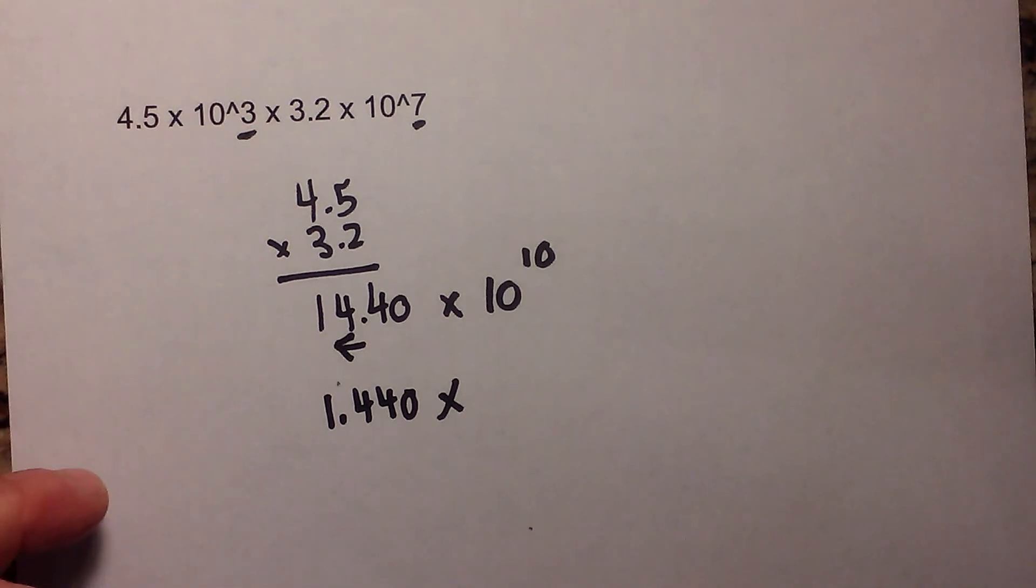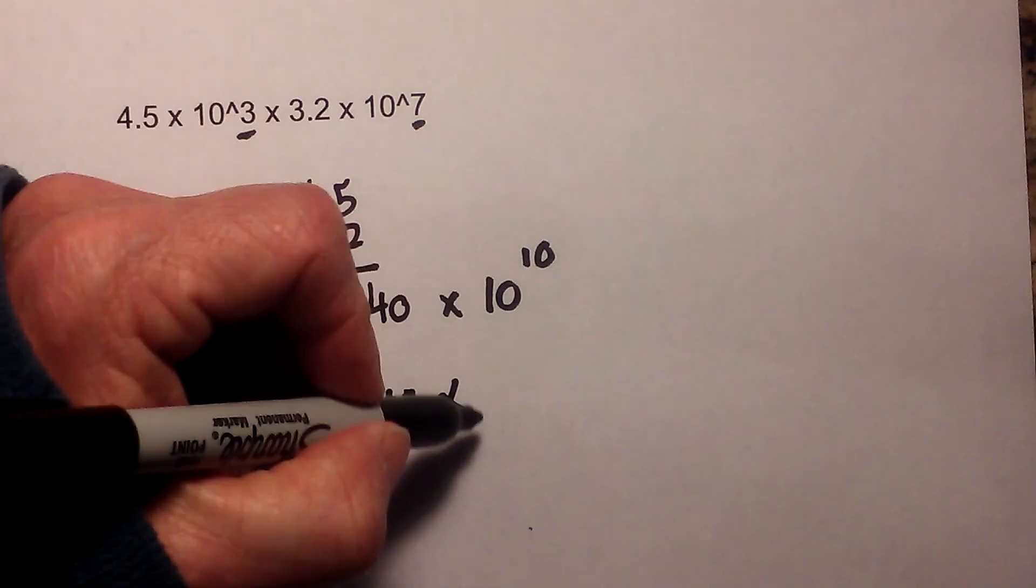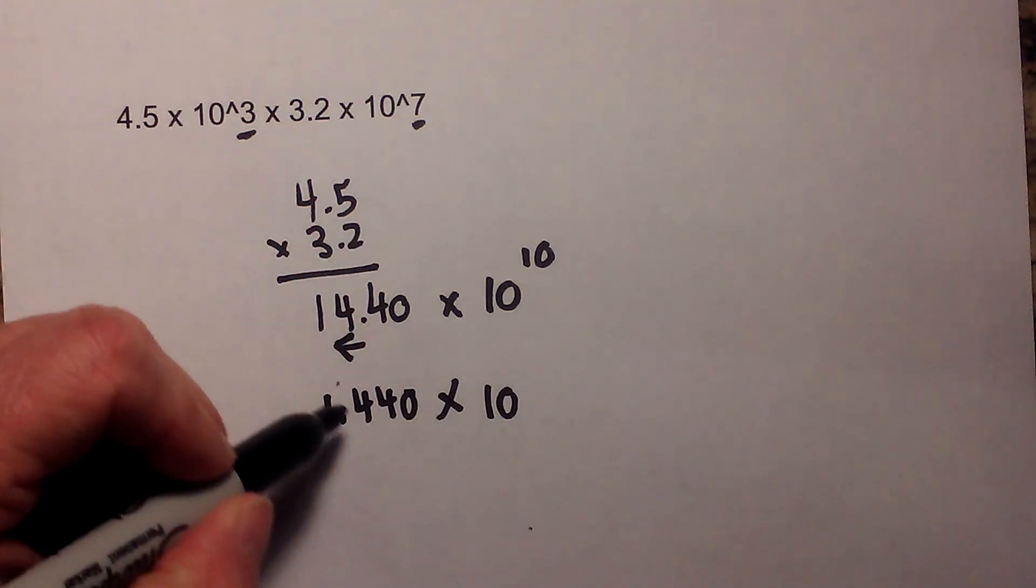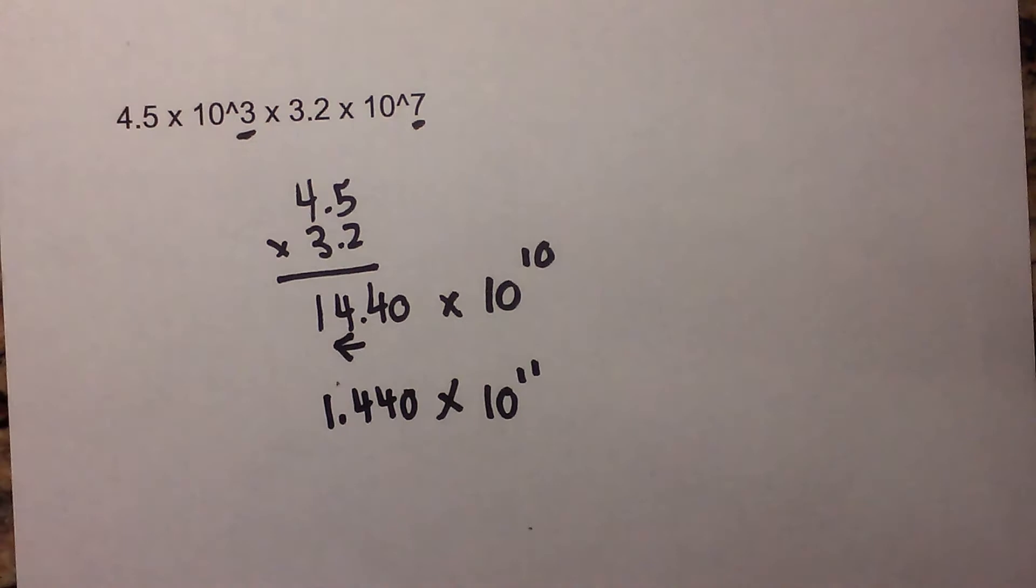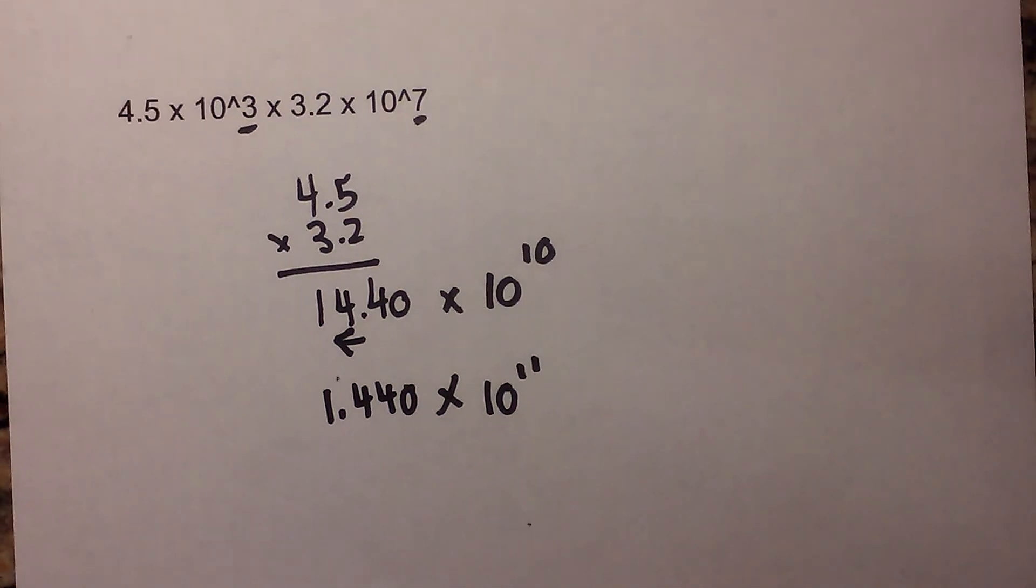And then I need to remember, anytime the number gets smaller, the exponent gets larger. So there is your answer: 1.440 times 10 to the 11th. I hope that helps in multiplying in scientific notation. Thanks for watching, and MooMoo Math uploads a new math and science video every day. Please subscribe and share.